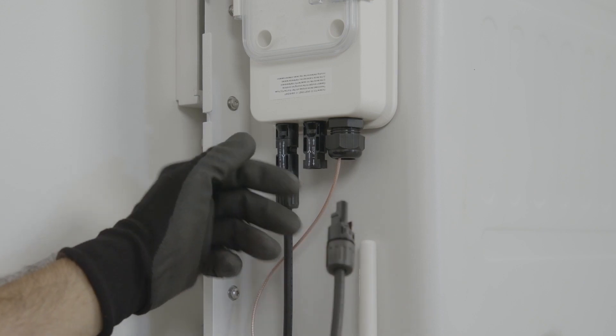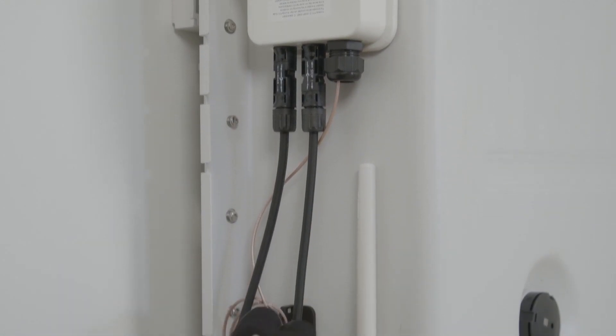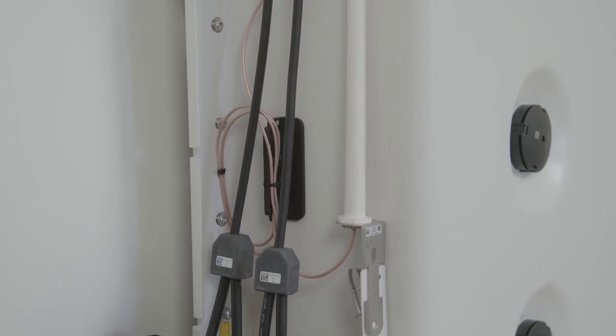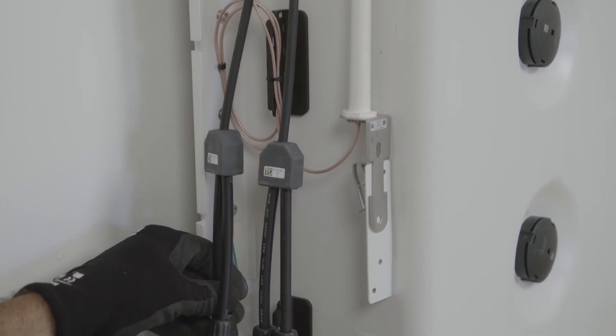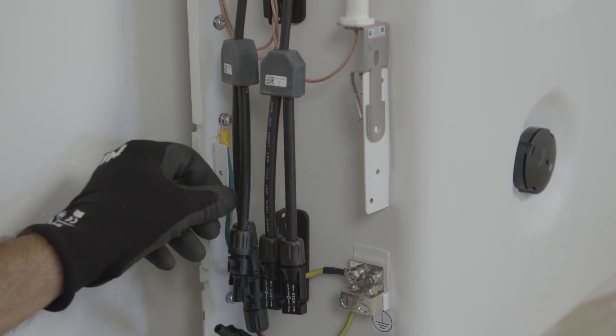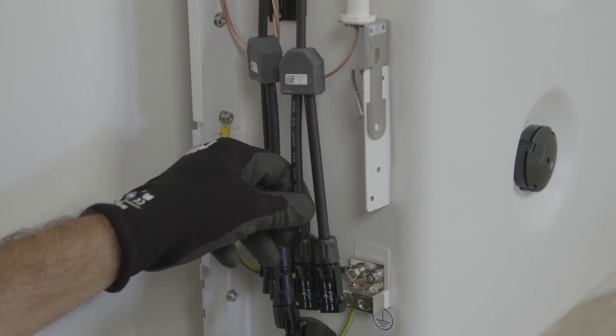If two SolarEdge home batteries are going to be connected in parallel, you'll need to use the SolarEdge Y branch connector. So simply plug those in and each of the associated DC connections, one from the additional battery and the second going back to the inverter.